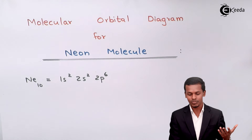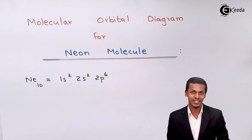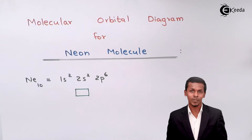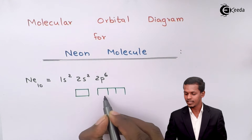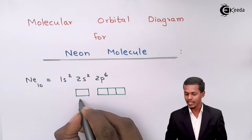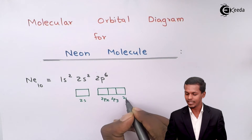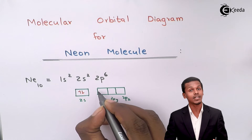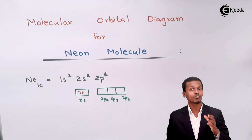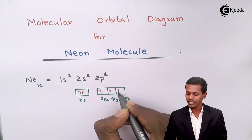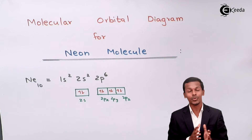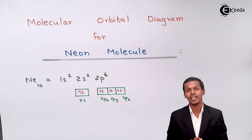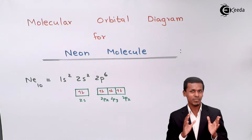Let us fill in the electrons to see how many unpaired electrons are present, so as to determine whether a bond can form between two neon atoms. The s sub-shell has one orbital and the p sub-shell has three orbitals: 2px, 2py, and 2pz. Filling in six electrons across the three p orbitals using Hund's rule gives all paired electrons. So there are no unpaired electrons, and that is why no bond can form between two neon atoms.